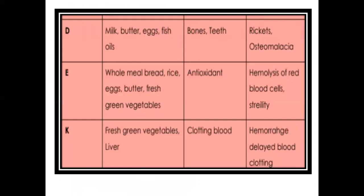Vitamin D is present in milk, butter, eggs, fish, and fish oil. It is important for bones and teeth. Deficiency of vitamin D in children causes rickets, and in grown-ups it causes osteomalacia. Vitamin E is present in whole meal bread, rice, eggs, butter, and fresh green vegetables. It is used as an antioxidant; its deficiency causes hemolysis of red blood cells and sterility. Vitamin K is present in fresh green vegetables and liver, and is important for blood clotting. Deficiency may cause hemorrhage — delayed blood clotting where the blood of the patient does not stop easily.